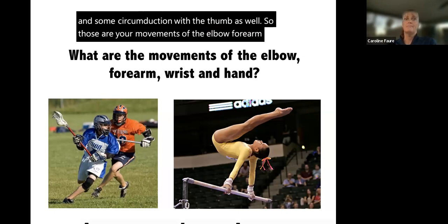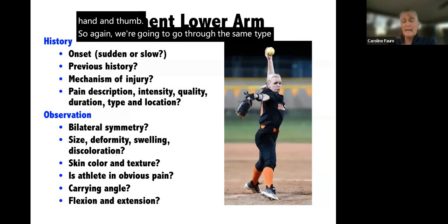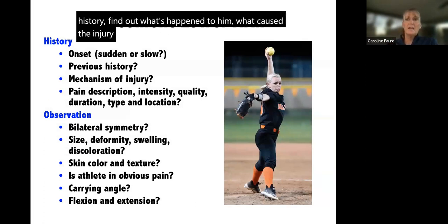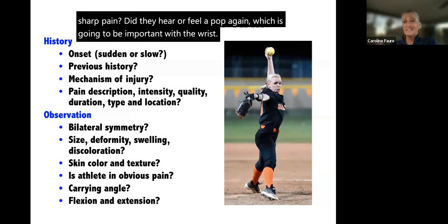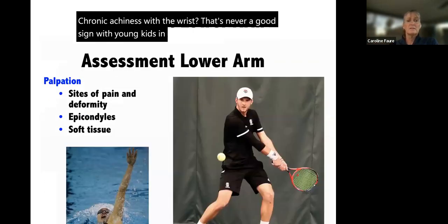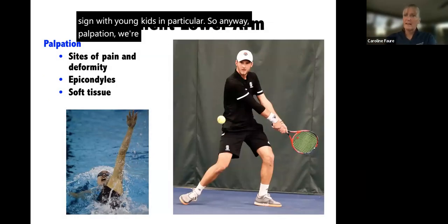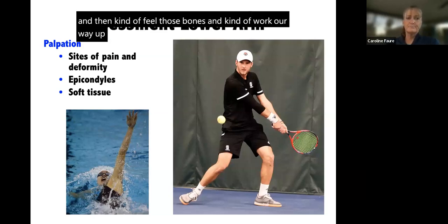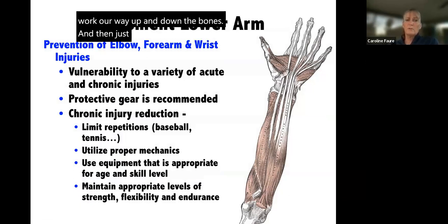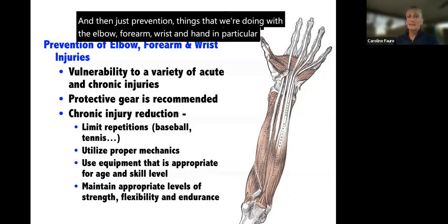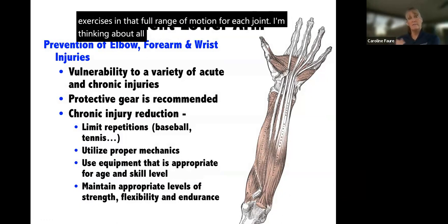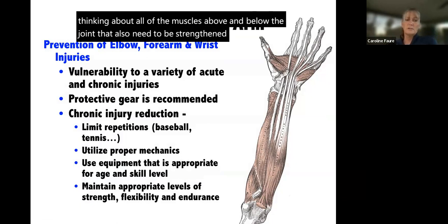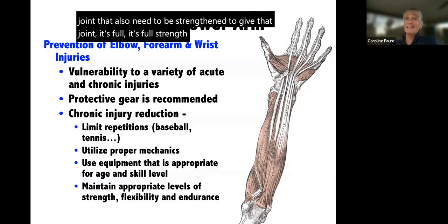We're going to go through the same type of history: find out what happened, what caused the injury, where their pain is, what kind of pain it is — an achiness suggests soft tissue; a sharp pain or a pop is going to be important especially with the wrist. Chronic achiness with the wrist in young kids is never a good sign. Palpation — we feel the muscle areas and work our way up and down the bones. Prevention involves strengthening and flexibility exercises through full range of motion, thinking about all muscles above and below the joint.